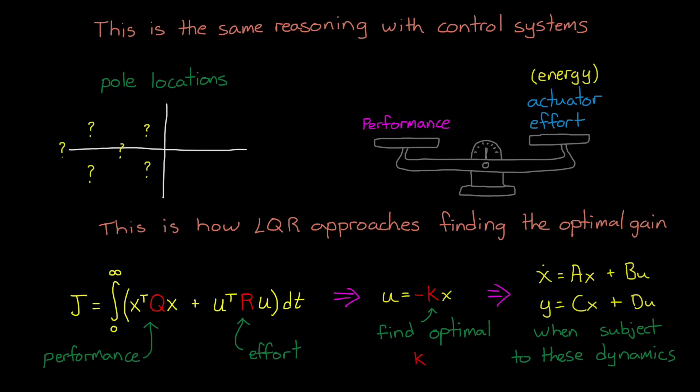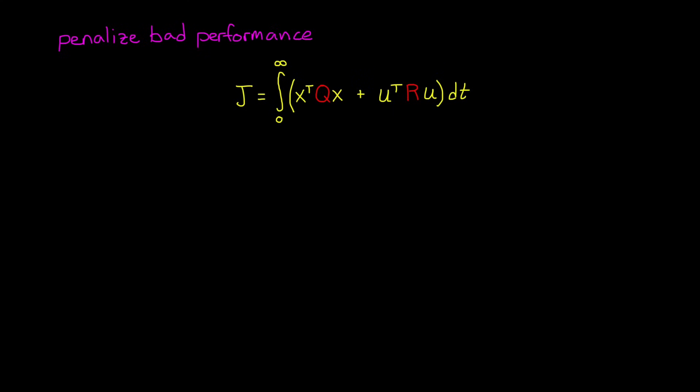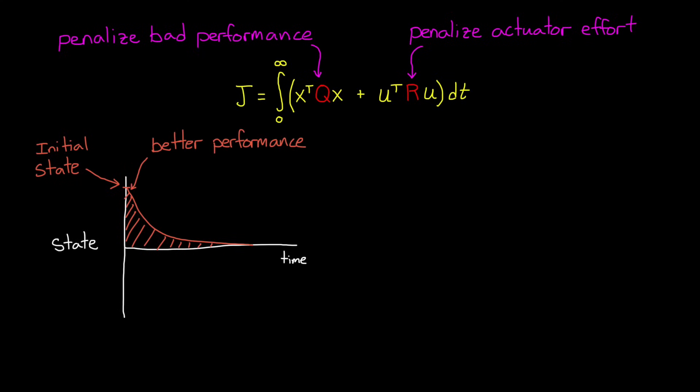Now the cost function that we use with LQR looks a little different than the function we developed for the travel example. But the concept is exactly the same. We penalize bad performance by adjusting Q, and we penalize actuator effort by adjusting R. So, let's look at what performance means for this cost function. Performance is judged on the state vector. For now, let's assume that we want every state to be 0, to be driven back to its starting equilibrium point. So if the system is initialized in some non-zero state, the faster it returns to 0, the better the performance is, and the lower the cost. And the way we can get a measure of how quickly it's returning to the desired state is by looking at the area under the curve. This is what the integral is doing. A curve with less area means that it spends more time closer to the goal than a curve with more area.